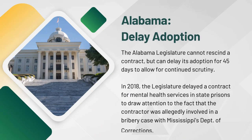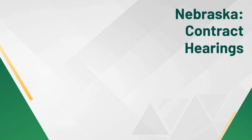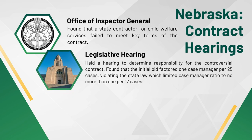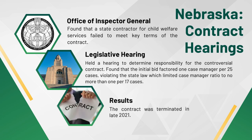Alabama can delay adoption of a contract by 45 days, allowing continued scrutiny of a proposed contract. In 2018, the legislature delayed a contract for mental health personnel in Alabama prisons to bring attention to the fact that the contractor was allegedly involved in a bribery case with Mississippi's Department of Corrections. While the legislature is unable to rescind a contract, drawing public scrutiny can cause agencies to reevaluate contracts. Nebraska can hold agency and contractor hearings to increase pressure on the administration to change or terminate a contract. After an Office of Inspector General report found a state contractor for child welfare services failed to meet key terms of the contract, the Nebraska legislature held a hearing that brought facts to light, including how the initial bid factored in one case manager per 25 cases, despite state law limiting the ratio to no more than one per 17. This contract was terminated in late 2021.